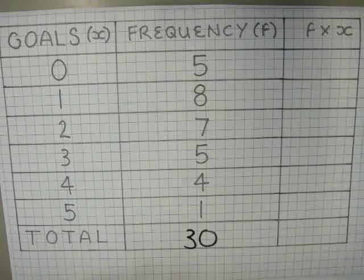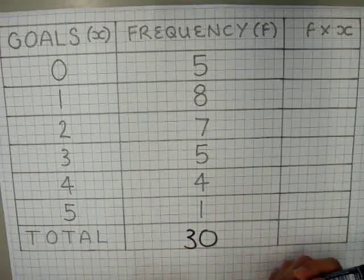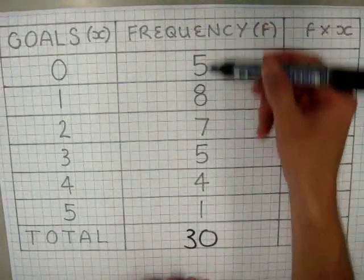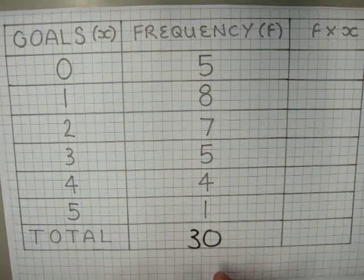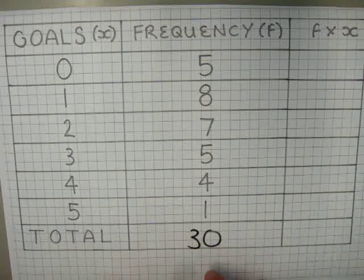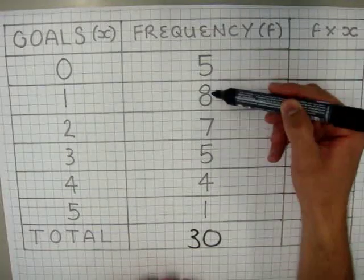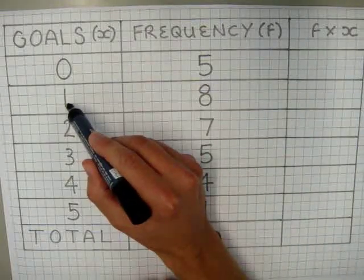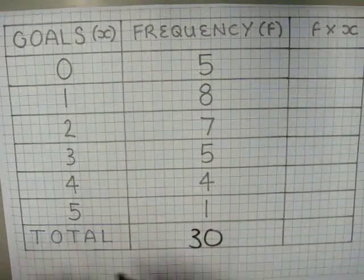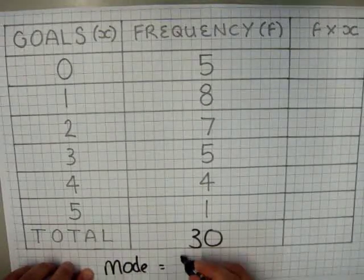We are now going to find the mode number of goals and the range of goals scored. For the mode, we look down the frequency column and find the highest frequency. The highest frequency is 8, so we look across to our data, giving us a mode of 1. So the mode number of goals scored is equal to 1.